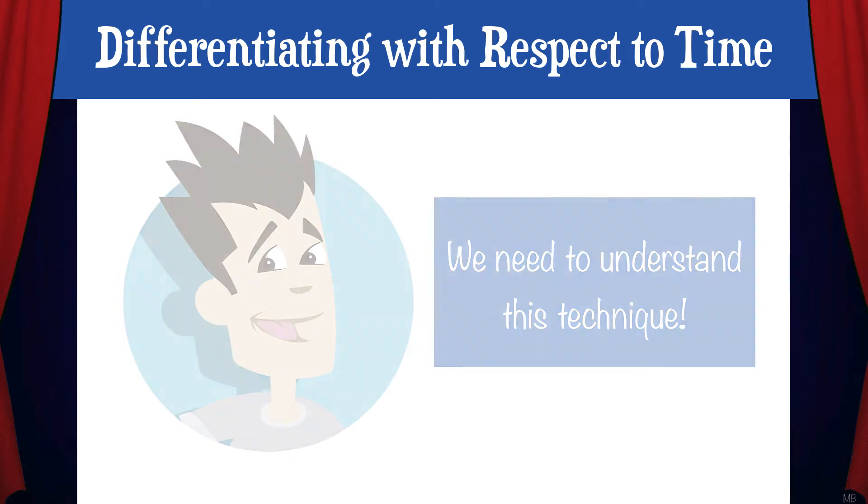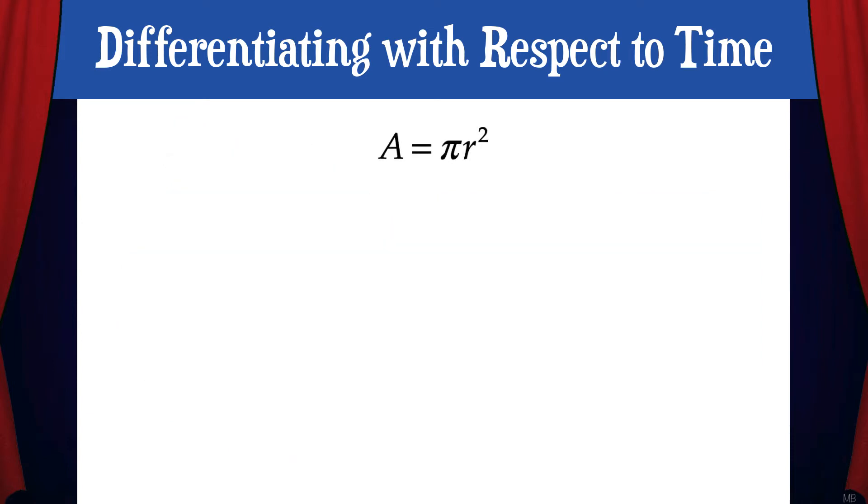Suppose we have the equation A equals pi r squared, the equation for finding the area of a circle. We can think of each variable in this equation as a separate function with respect to time. We'll see how this connects to a real scenario a little later.